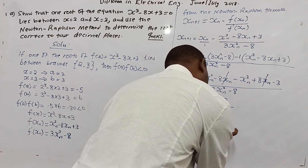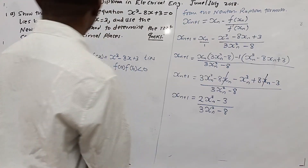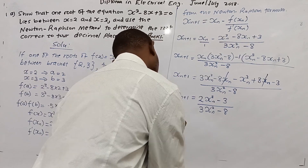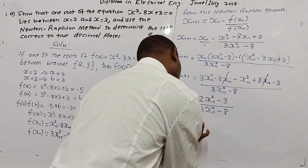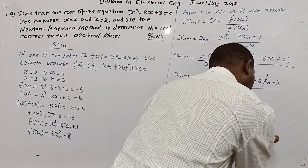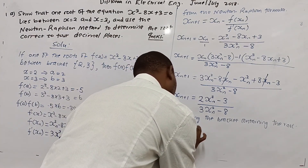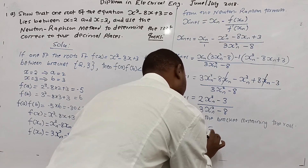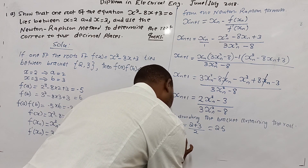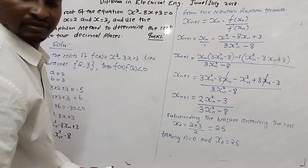Taking n = 0 and finding x₀: since we are not given x₀, we find it by subdividing the bracket containing the root. Subdividing the bracket [2, 3] over 2 gives us (2 + 3)/2 = 2.5. So x₀ = 2.5. Now let us start iterating.